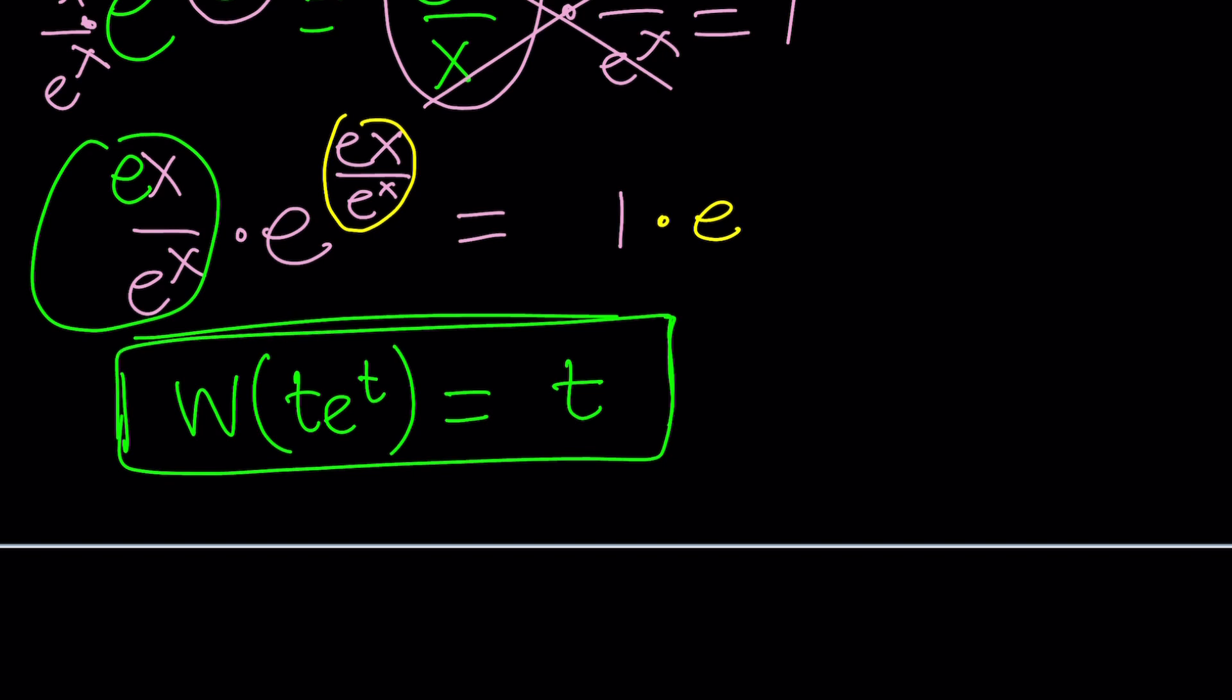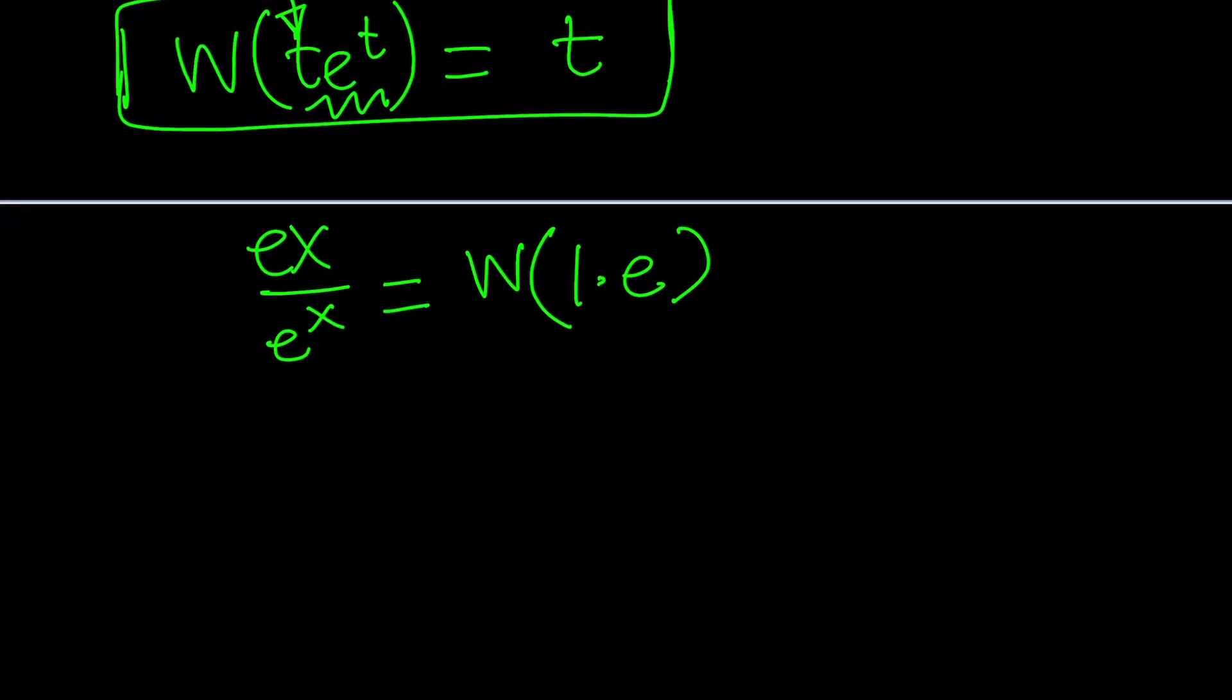So if I apply Lambert's w function to this, in this case my t is this, which is the bubble and this is t as well. So when I apply it I'm going to get t, which is e x over e to the x equals on the right hand side I need to apply it to one e. But how do you apply it to one e or just e? Well, I'm going to write it as one times e to the power one because e is e to the first power and ta-da! This is where the magic comes in because this is just going to be one.